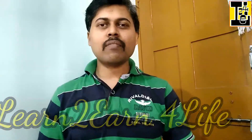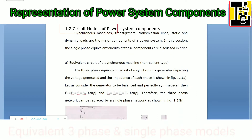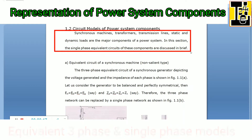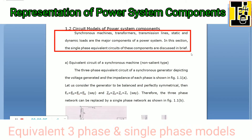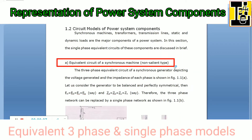Hello everybody, welcome to the channel Learn to Earn for Life. In this video I will discuss the circuit models of power system components. The synchronous machines, transformers, transmission lines, static loads, and dynamic loads are the major components of a power system. I will discuss the single phase equivalent circuit of these components in brief. Let us start with the equivalent circuit of a synchronous machine of non-salient type.